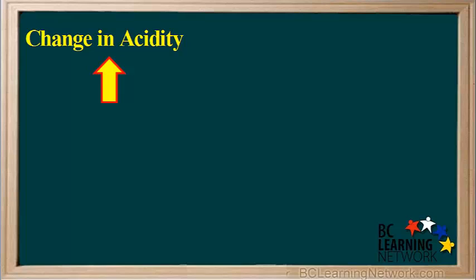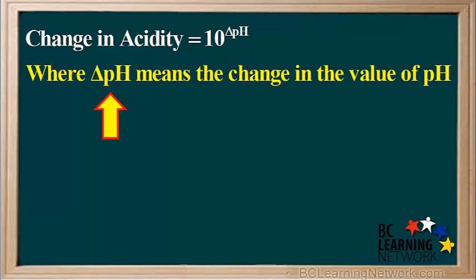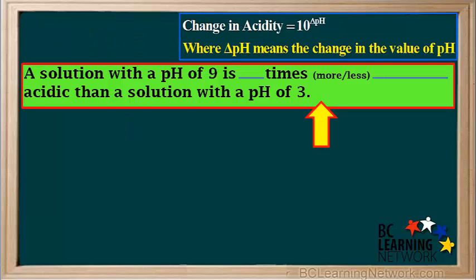We can derive an equation to predict the change in acidity when the pH value changes. It is: change in acidity equals ten to the power of the change in pH. The triangle symbol, stated as delta, means change in. So delta pH means the change in the value of pH. Here is a question based on this equation. Comparing solutions with a pH of 9 and a pH of 3, it asks whether the pH 9 solution is more or less acidic than the pH 3 solution, and how many times more or less acidic it is.